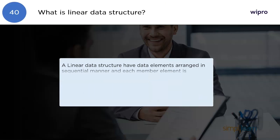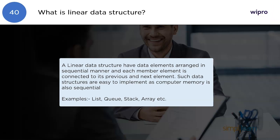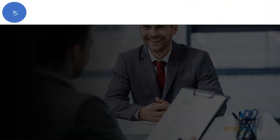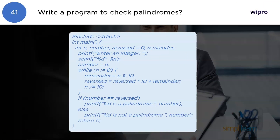What is a linear data structure? A linear data structure has data elements arranged in sequential manner, and each member element is connected to its previous and next element. Such data structures are easy to implement as computer memory is also sequential. Examples include list, queue, stack, and array.